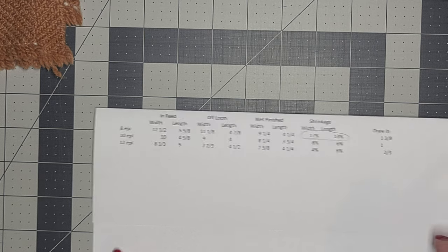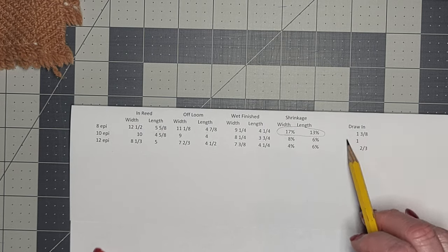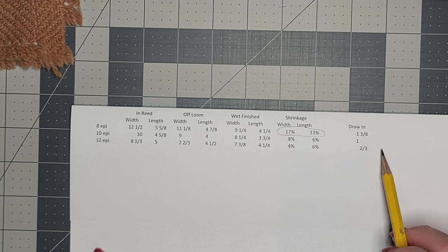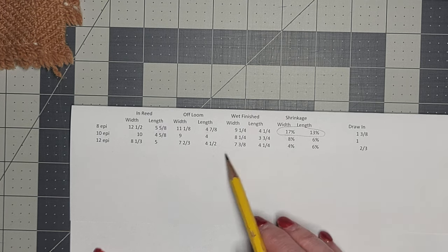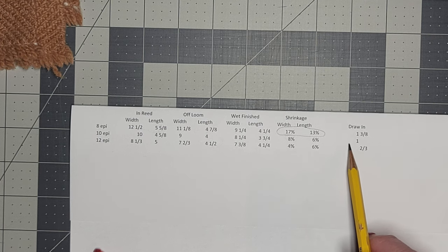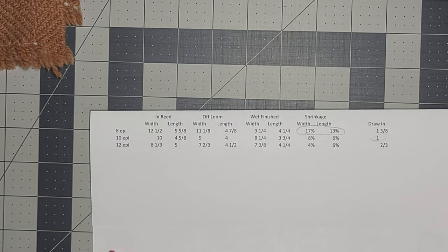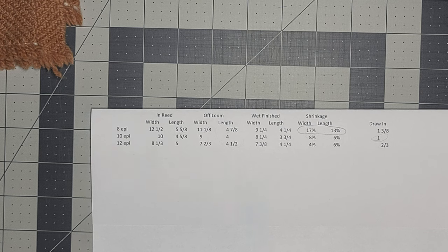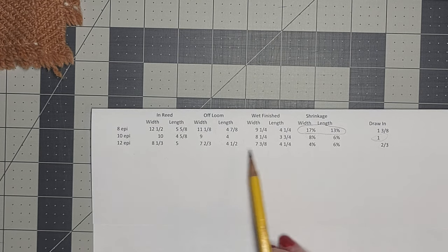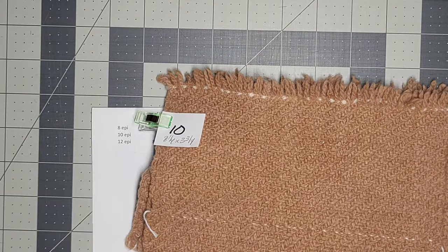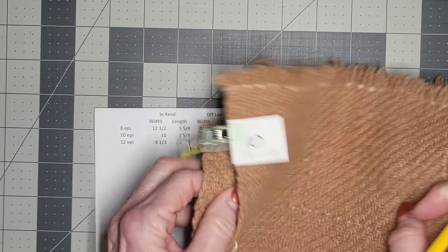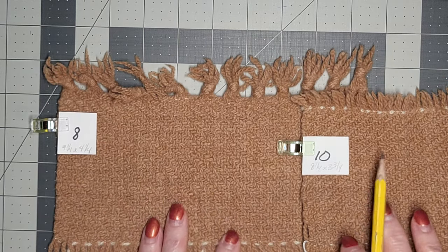And then I wanted to make sure that I knew what my draw-in rate was. On the eight ends per inch I was a little over one inch, on the 12 ends per inch I was a little under one inch, but on the 10 I was right about one inch so that's a good number to know also. And so looking at these numbers and feeling how the cloth feels, I know I'm not going to use the 12 so it's a difference between the eight and the 10.